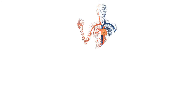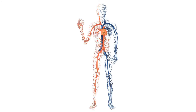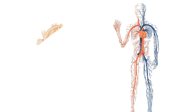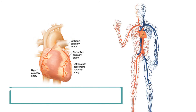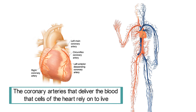One example of this is coronary artery disease. When the heart pumps blood, it is only transporting the blood. The cells of the myocardium, the muscular layer of the heart, are not receiving any nutrients from the blood passing through its four chambers. Rather, the blood must be pumped through the arteries of the heart, known as coronary arteries. It is the coronary arteries that deliver the blood that cells of the heart rely on to live.